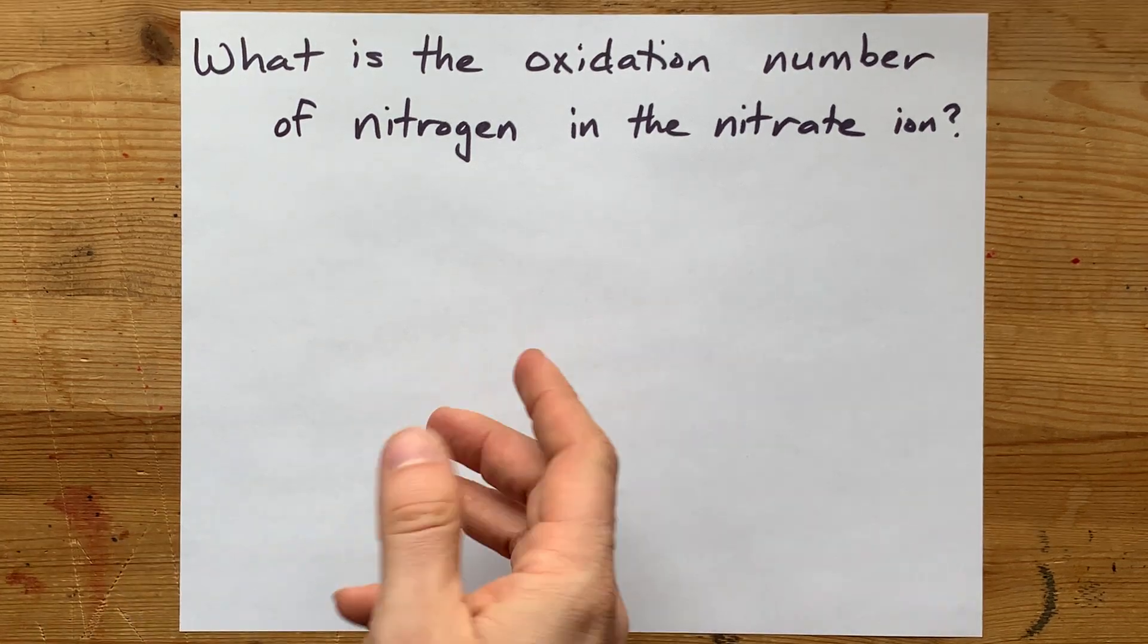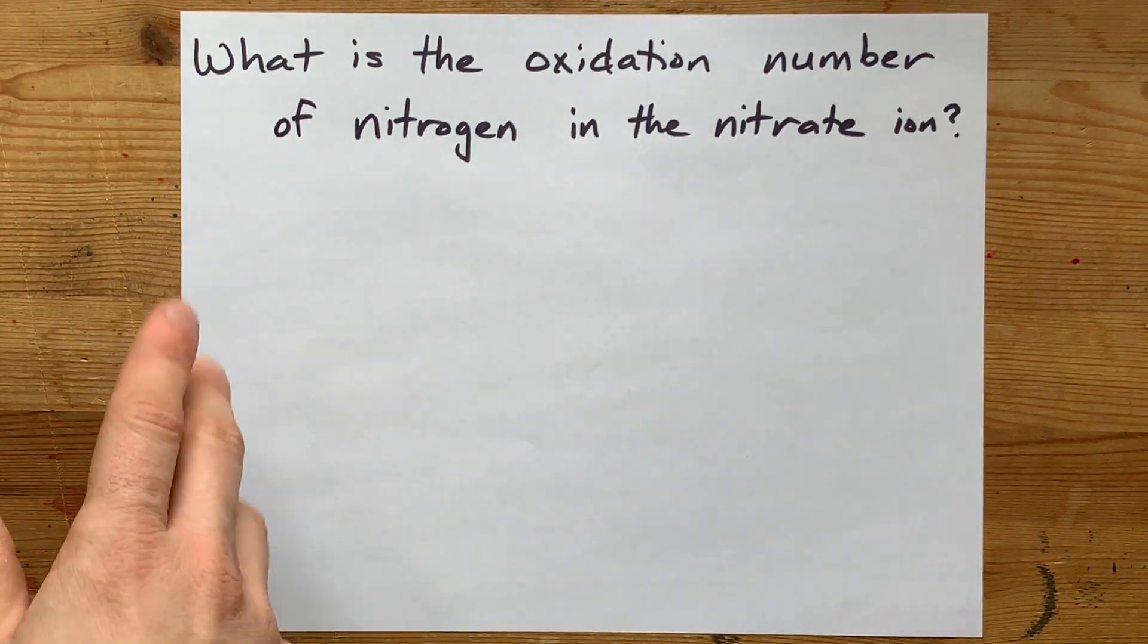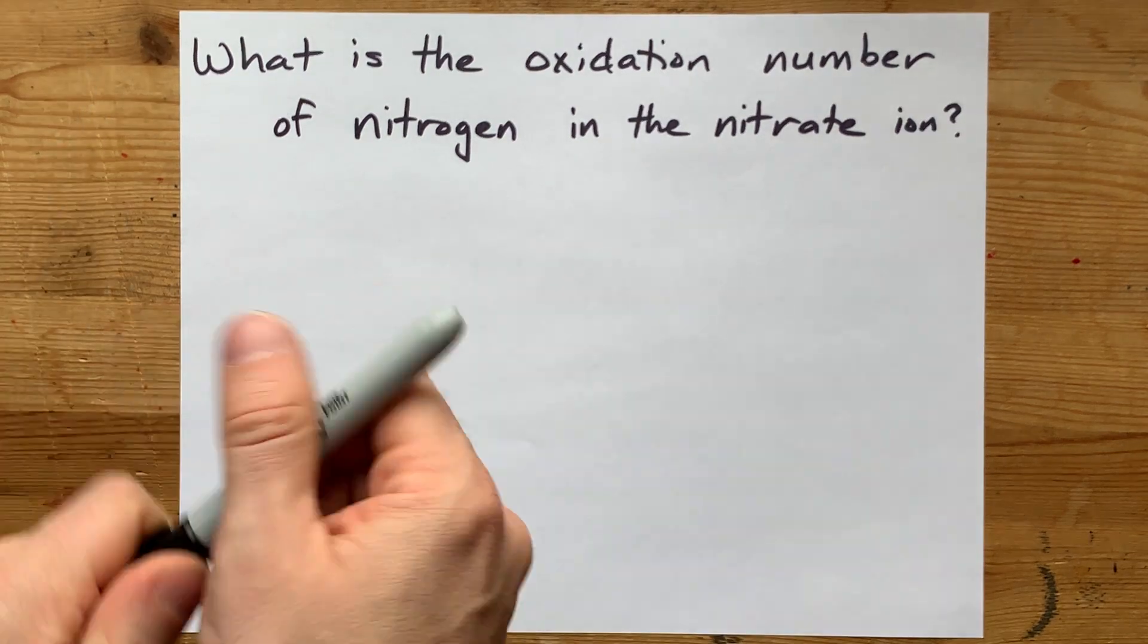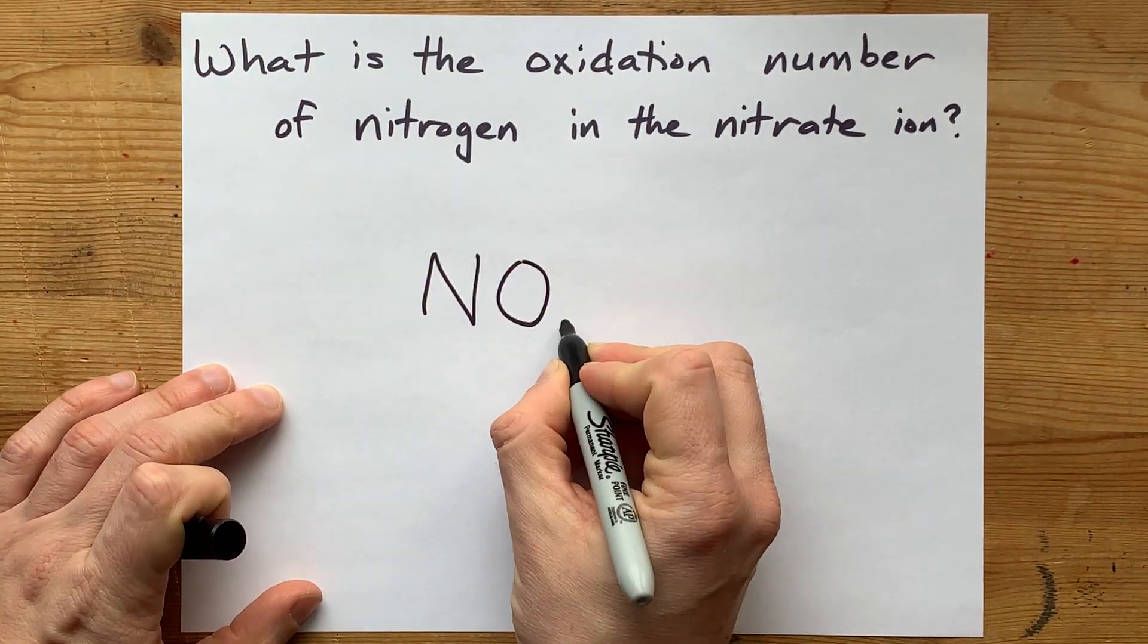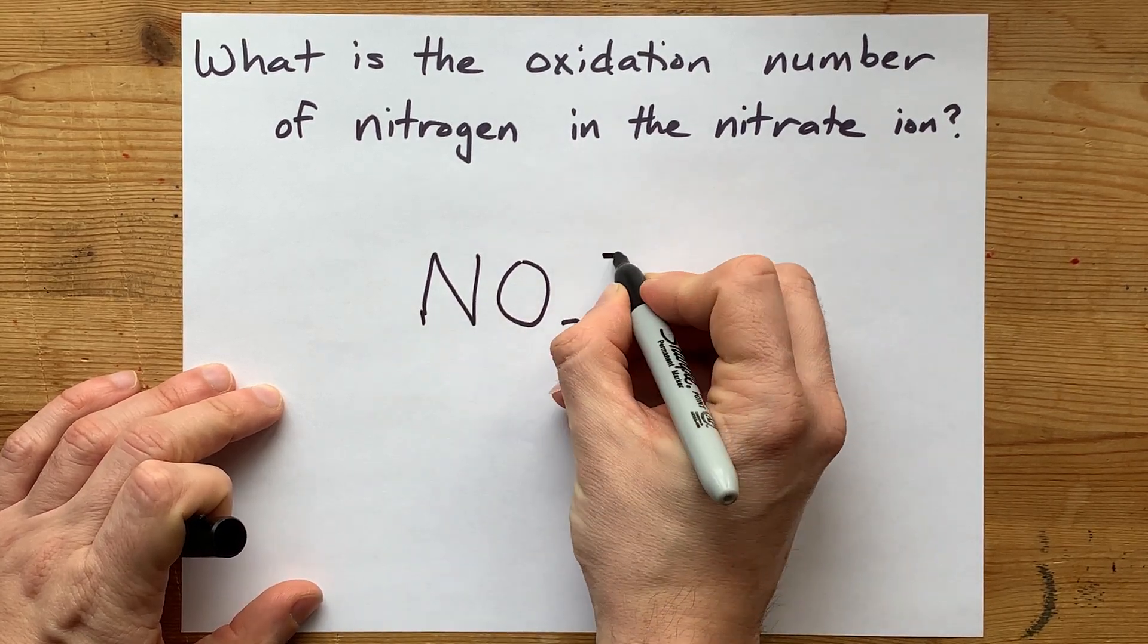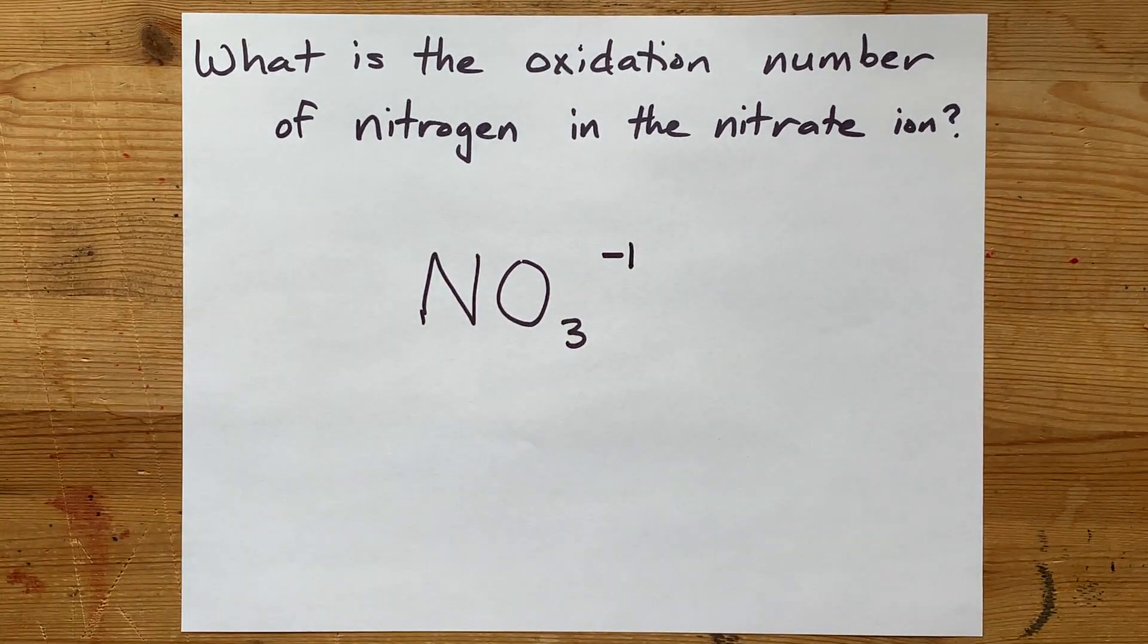What is the oxidation number of nitrogen in the nitrate ion? Well, you're going to have to know what the nitrate ion is in the first place. It's a nitrogen with three oxygens, NO3, and an overall charge of minus one.